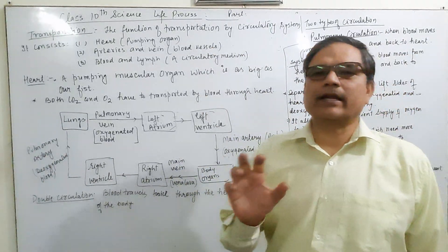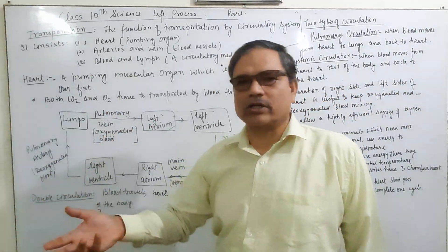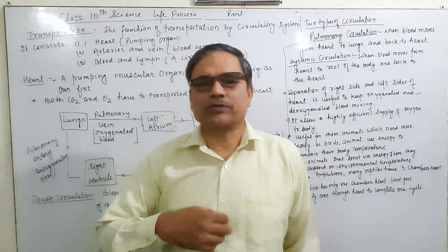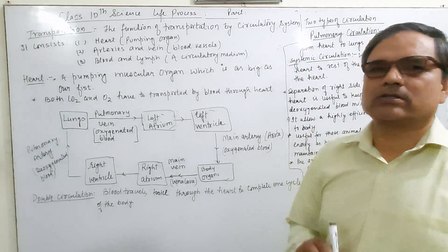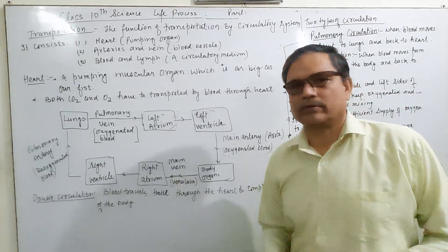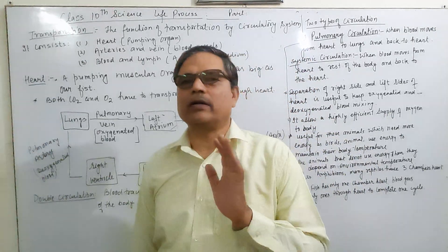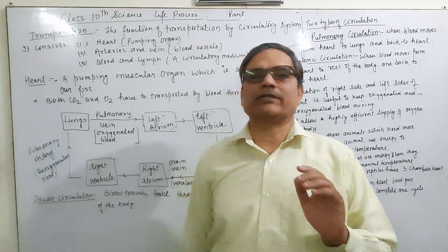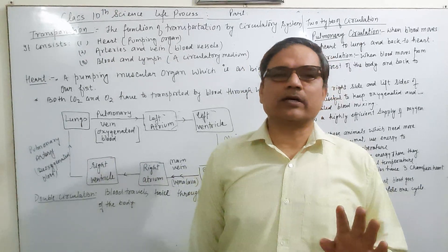The heart carries both carbon dioxide and oxygen through the blood, transferring them inside our body. The heart is a muscular pumping organ which pushes the blood at high or low pressure, exerting pressure on the walls of the blood vessels — that is blood pressure. In human beings, the heart consists of four chambers.